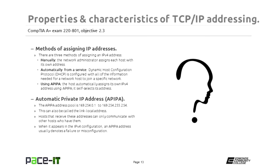Now let's talk about methods of assigning IP addresses. There are three methods. First, manually — the network administrator assigns each host its own address. It works great if you have 10 or fewer devices on your network, but it gets really unwieldy really fast. In today's modern networks, it probably would not be practical at all.